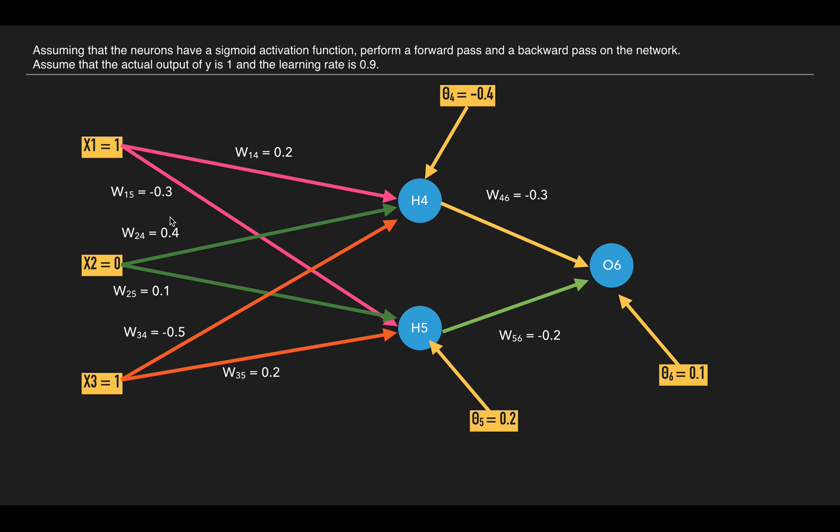So we have initialized with these weights. These are random values. And these are the biases: theta_4, theta_5, and theta_6.